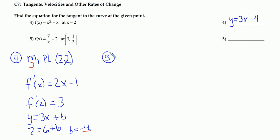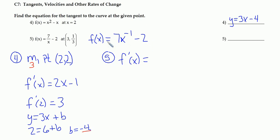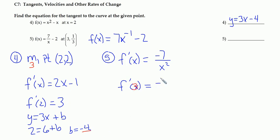For number 5, same process. I just need to think of f(x) in a slightly different form: 7 over x is the same as 7x to the negative 1 power, minus 2. Again, I need a slope and a point. They gave me the whole point this time: (3, 1/3). I just need to find the slope using the derivative. The derivative of 7x to the negative 1 minus 2: negative 1 times 7 is negative 7, reduce the power by 1 gives x to the negative 2, or negative 7 over x squared. The derivative of the constant negative 2 is 0. Plugging in x equals 3, I get negative 7 over 9.